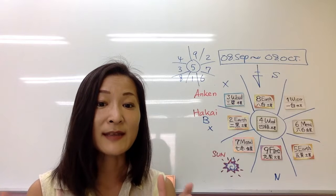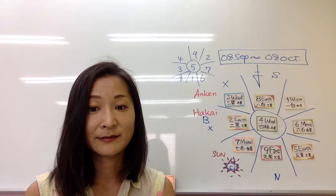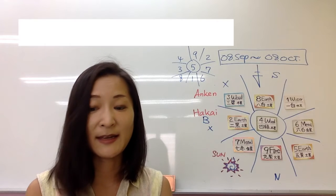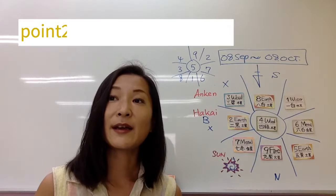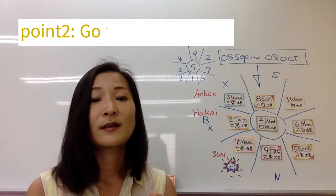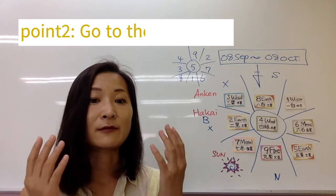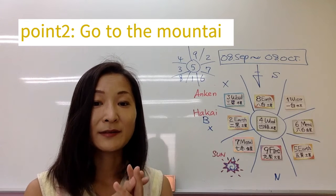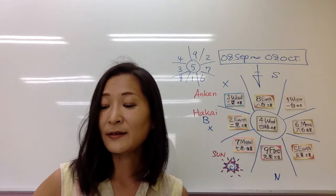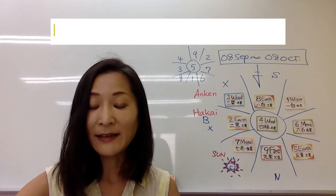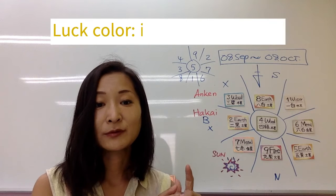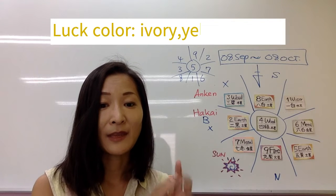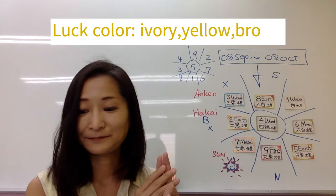So I mean it's not bad things. Lucky action is go to mountains, enjoy barbecue, or reading books, talking, whatever. And lucky color is brown, ivory, and yellow.